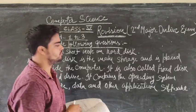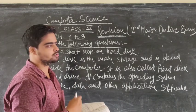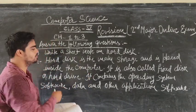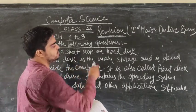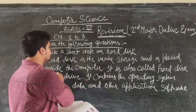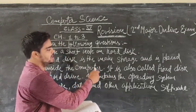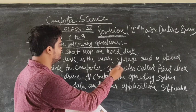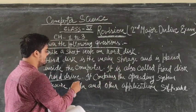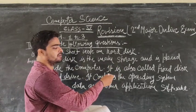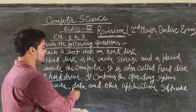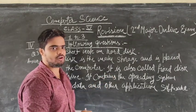Question 3: Write a short note on hard disk. Answer: Hard disk is the main storage and it is placed inside the computer. It is also called the fixed disk or hard drive. It also contains the operating system software, data, and other application software.